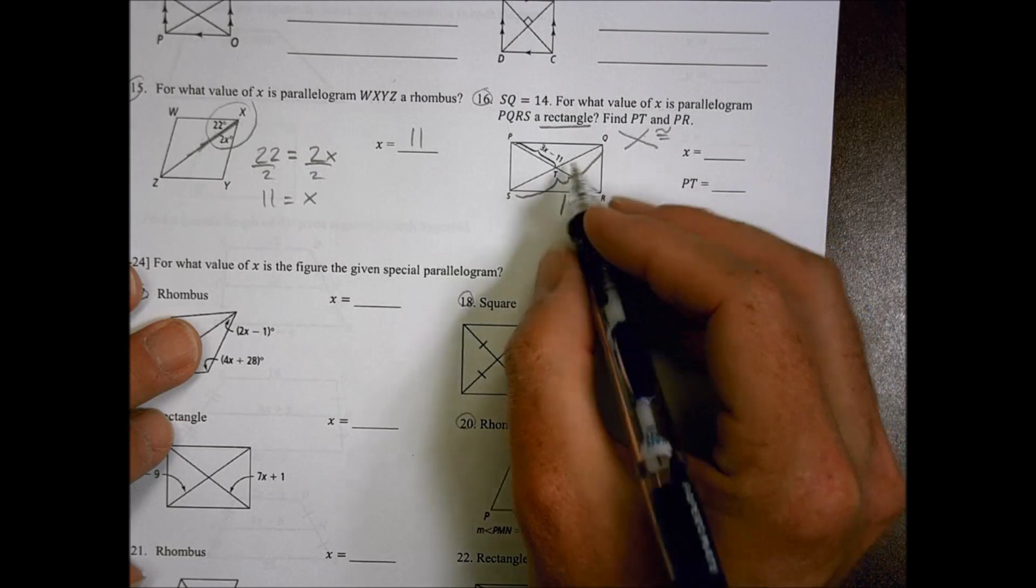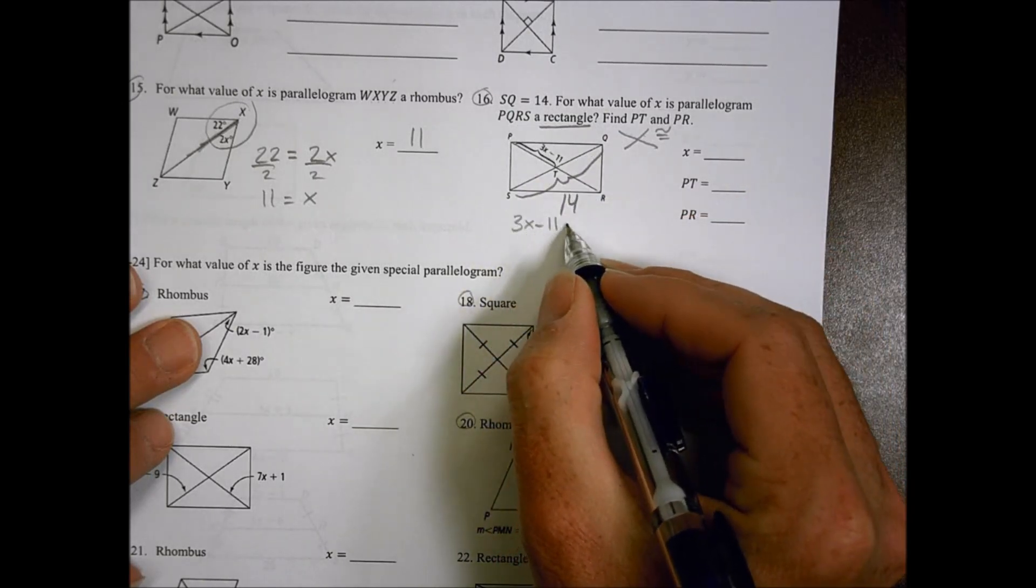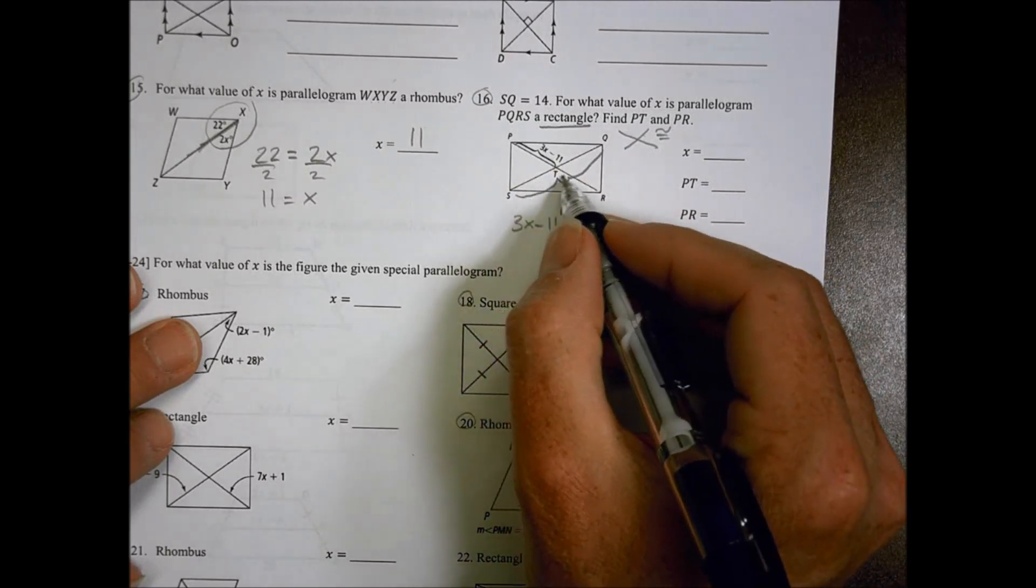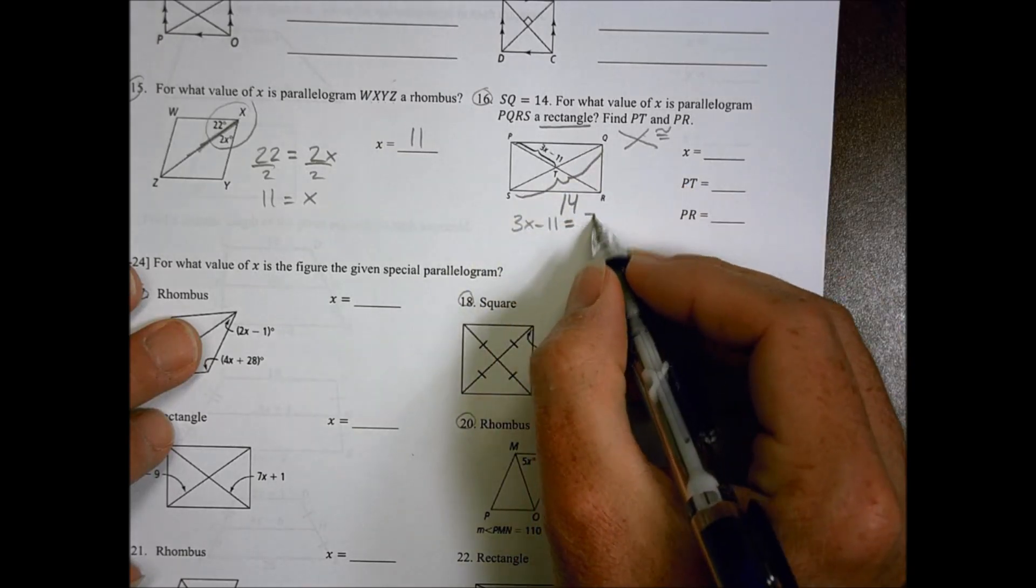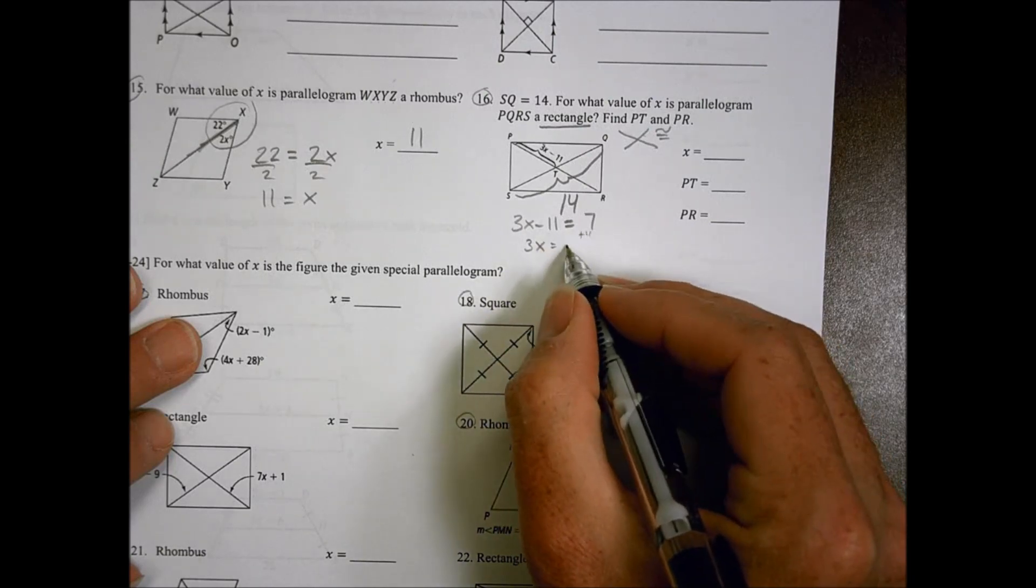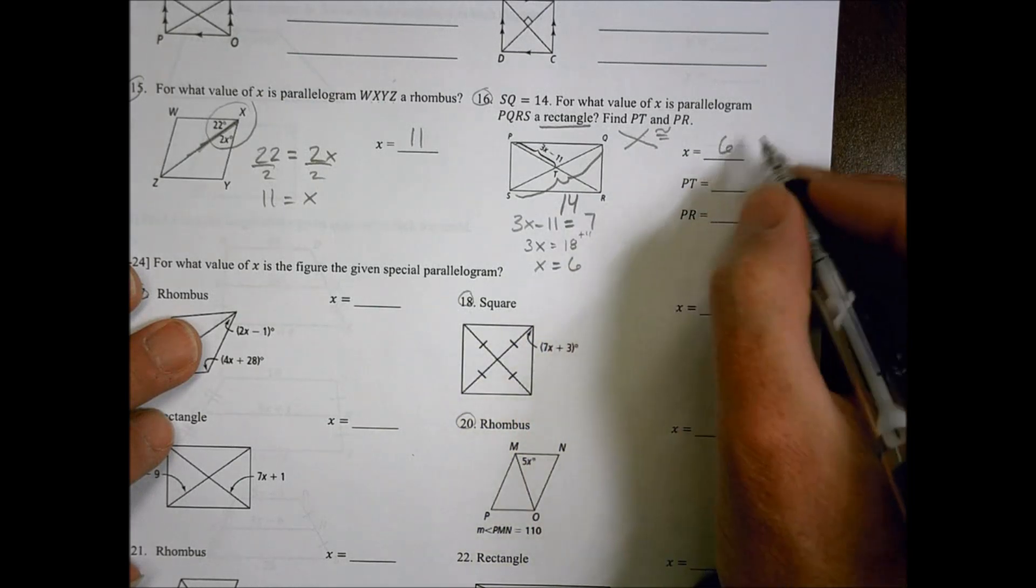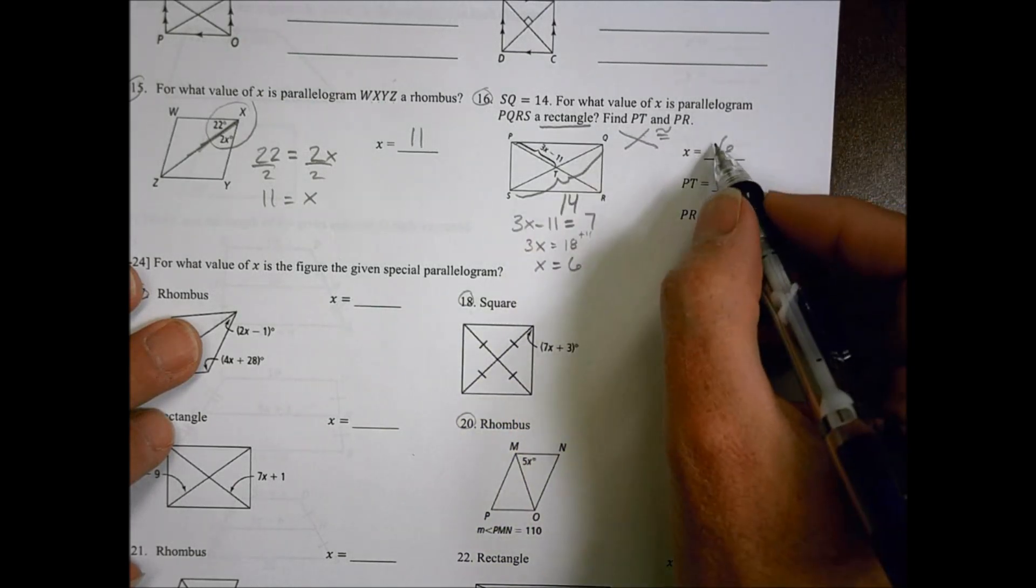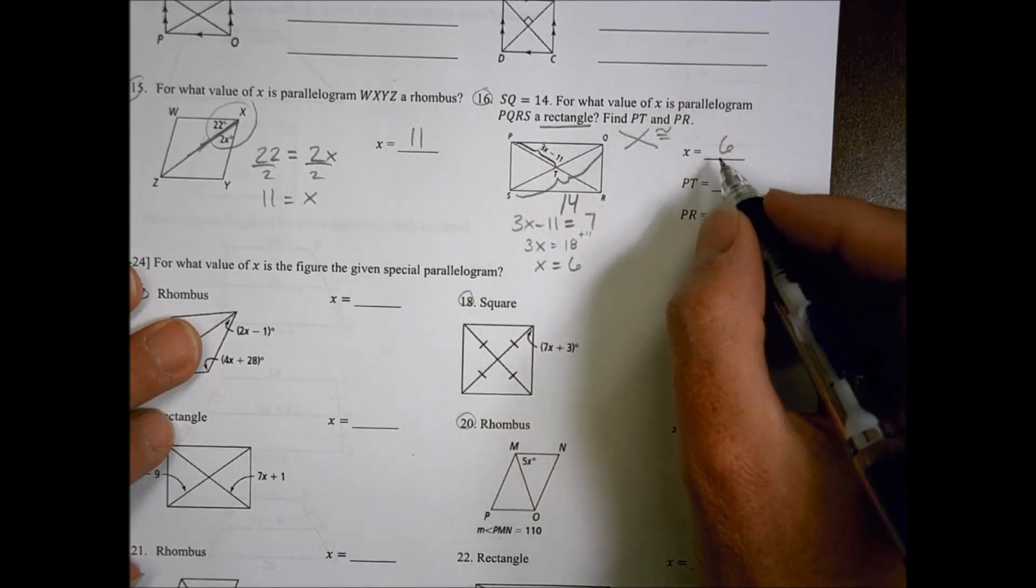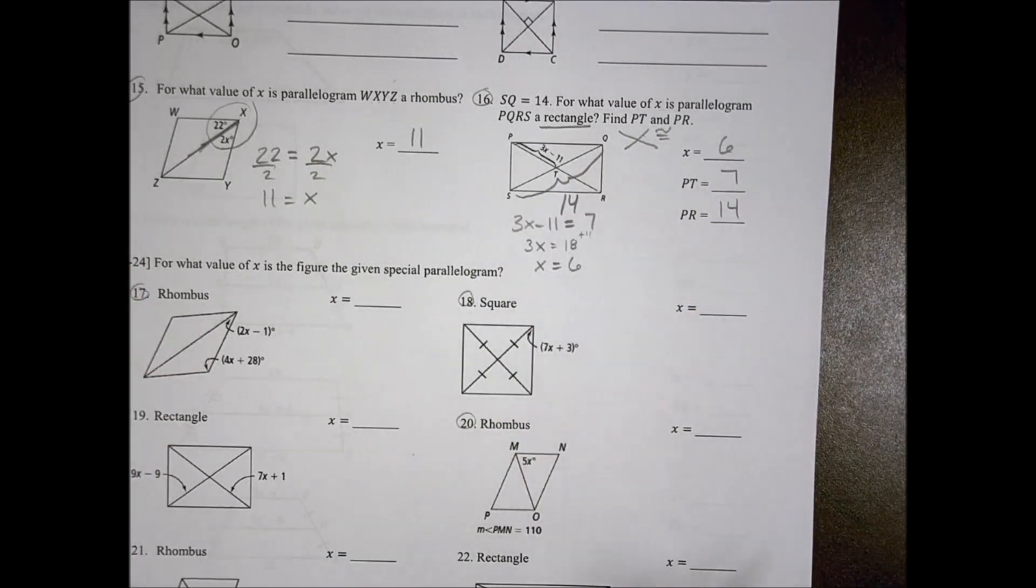So that would mean that if I took the 3X minus 11, it should be equal to, because it's half, half of the big length. Well half of 14 is 7. So I'm going to do 3X, I'm going to add 11 over here, equals 18, which means X is going to be equal to 6. So my length of PT, if I plug it back in there, 3 times 6 is 18 minus 11. 18 minus 11 is 7, and PR, the whole thing, is going to be the same as the other one, 14.